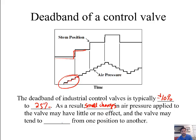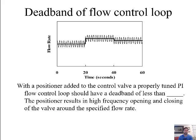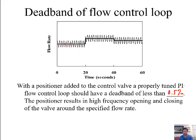To solve the deadband problem, valves are often equipped with a valve positioner — essentially a P-only controller with a very high gain applied to the valve. The controller sends a signal to the valve positioner, which moves the stem position as needed, allowing small changes in air pressure to move the valve seamlessly. When valve positioners are used, the dead band is reduced to around 0.5%, giving significant improvements in control.